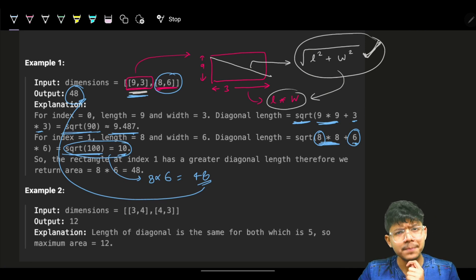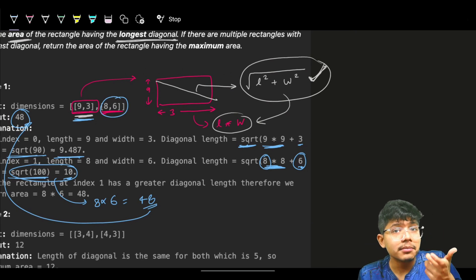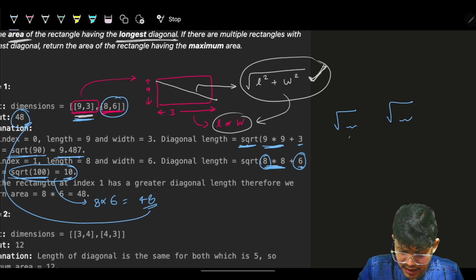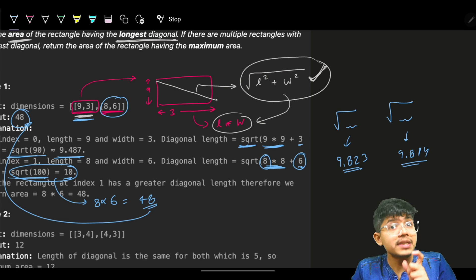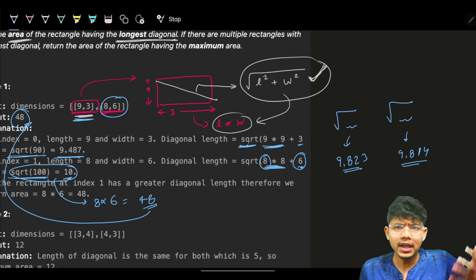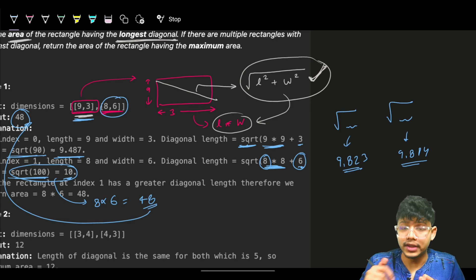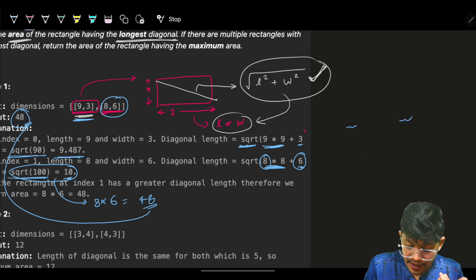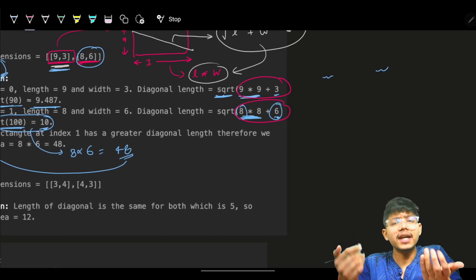Should we just use a double? When comparing double values, precision can go wrong — if you get something like √(some number) giving 9.823 vs 9.814, you might get the wrong result depending on precision. Although a double has very high precision, it's always better to square both sides. If we square both sides, the square root goes away, and we can compare the actual values: 9² + 3² vs 8² + 6². Whoever is bigger has the maximum diagonal.